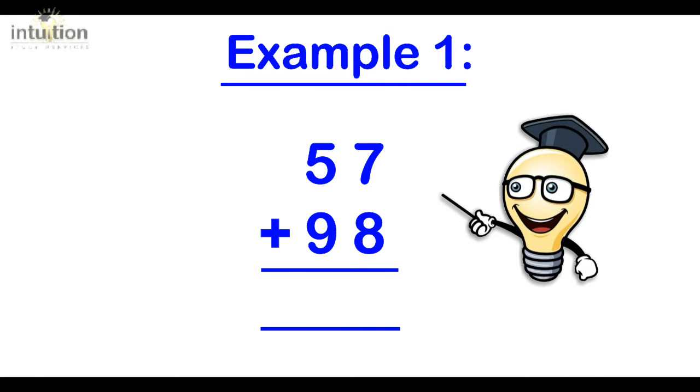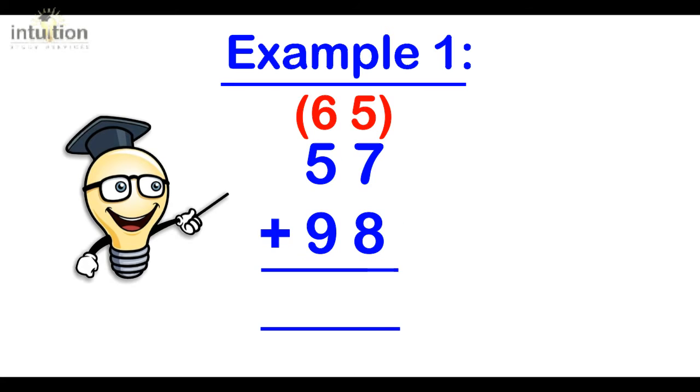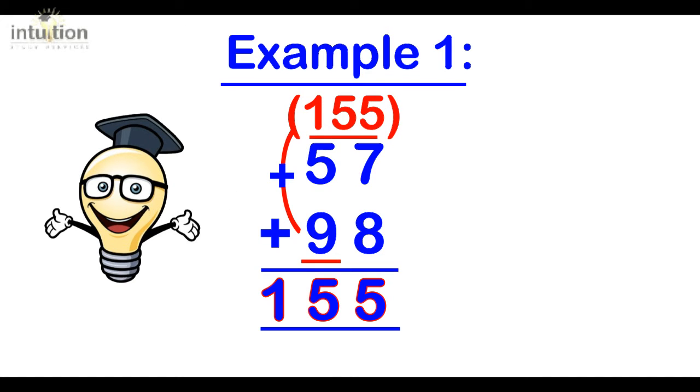So first we start with the top number which is 57 and we add any units onto it. So that's 57 plus 8 which gives us 65. Then we add any remaining tens left over so we know that there are 9 tens left over or 90 left over. So 65 plus 90 gives us 155 and there we go.